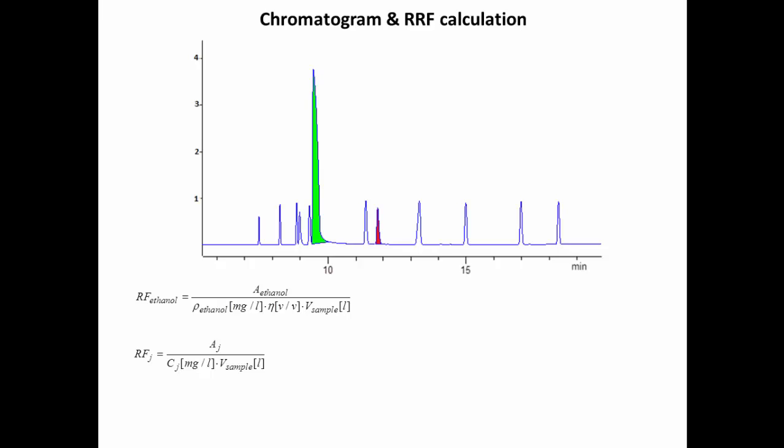Besides area values, formulas include volumes of the sample entered into chromatograph and the concentration of J compound, which can be calculated during gravimetric preparations. As to ethanol, it was earlier explained that it is possible to replace ethanol concentration by density. Also, an eta value should be added. Eta shows the volumetric content of ethanol in solution C and in our case it's equal to 0.4.